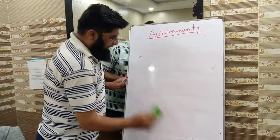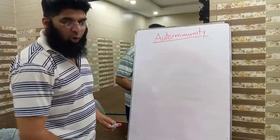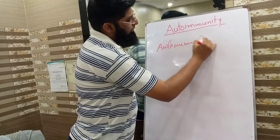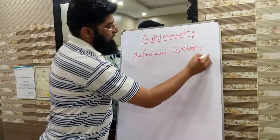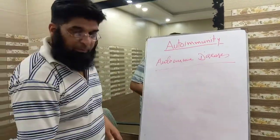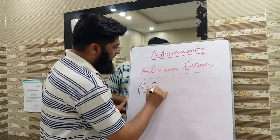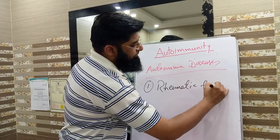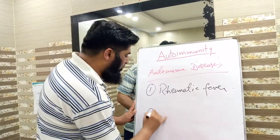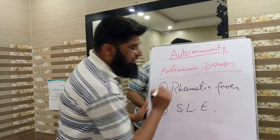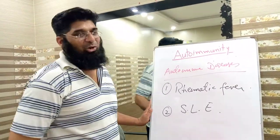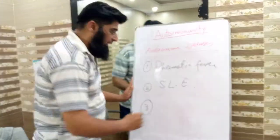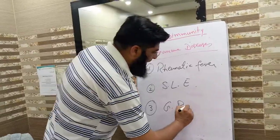Here are some of the names of common autoimmune diseases: number one, rheumatic fever; number two, systemic lupus erythematosus (SLE); number three, GB syndrome; number four, Goodpasture's syndrome.